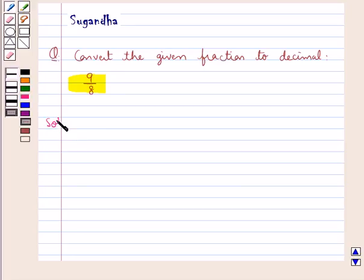Let's move on to the solution now. We are given the fraction 9 upon 8 and we need to convert this fraction to a decimal. This fraction 9 upon 8 can be expressed as a decimal by simply dividing 9 by 8. So we can write 9 upon 8 as 9 divided by 8.